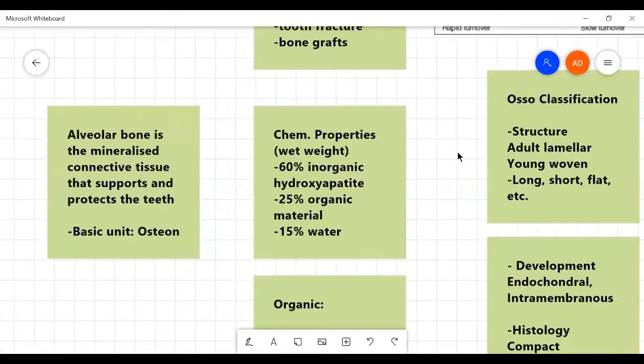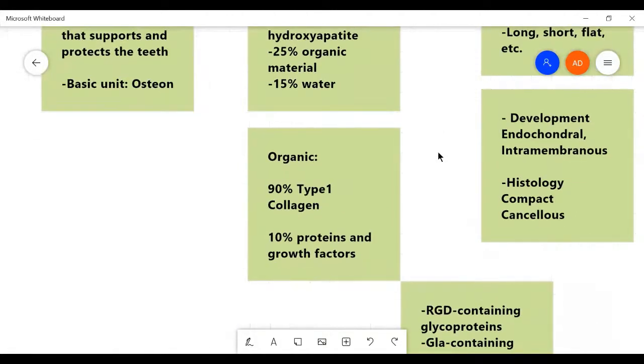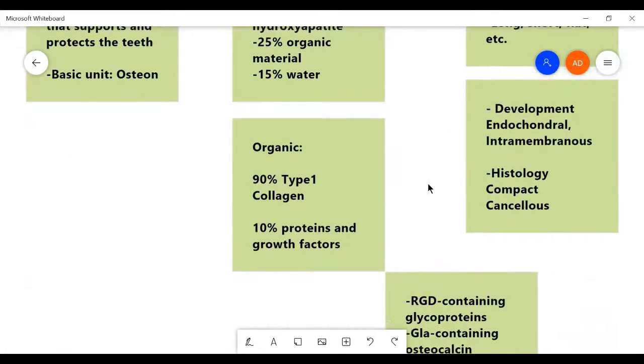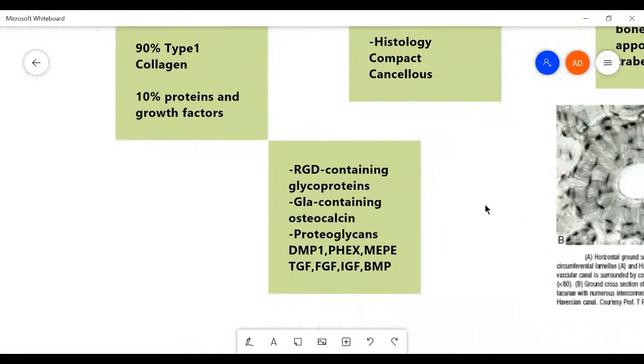It is 60% inorganic hydroxyapatite by wet weight. And the 25% organic material in it is 90% type 1 collagen, 10% proteins and other growth factors like RGD containing glycoproteins and GLA containing osteocalcin, proteoglycans, and genetic factors like DMP1, FECS.